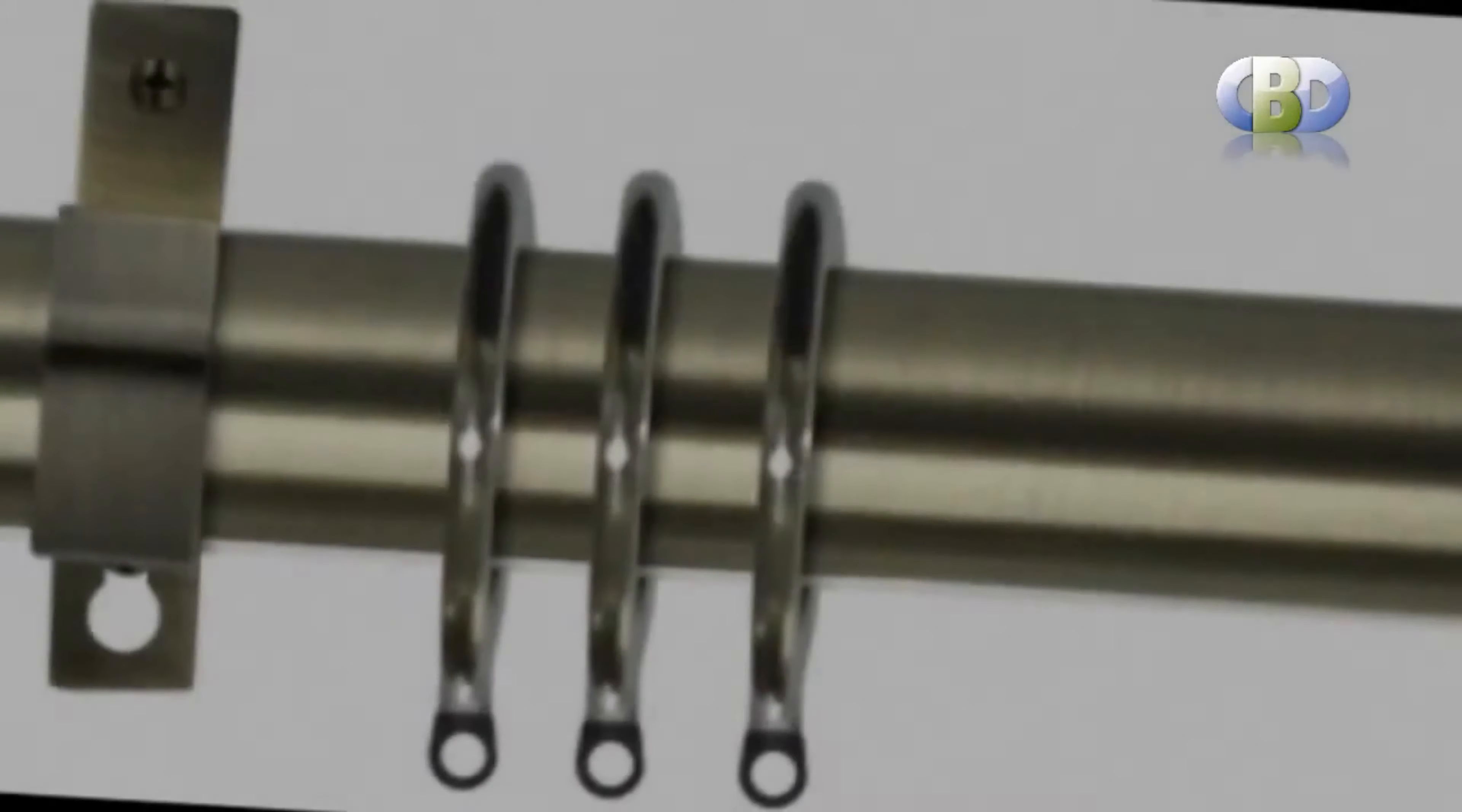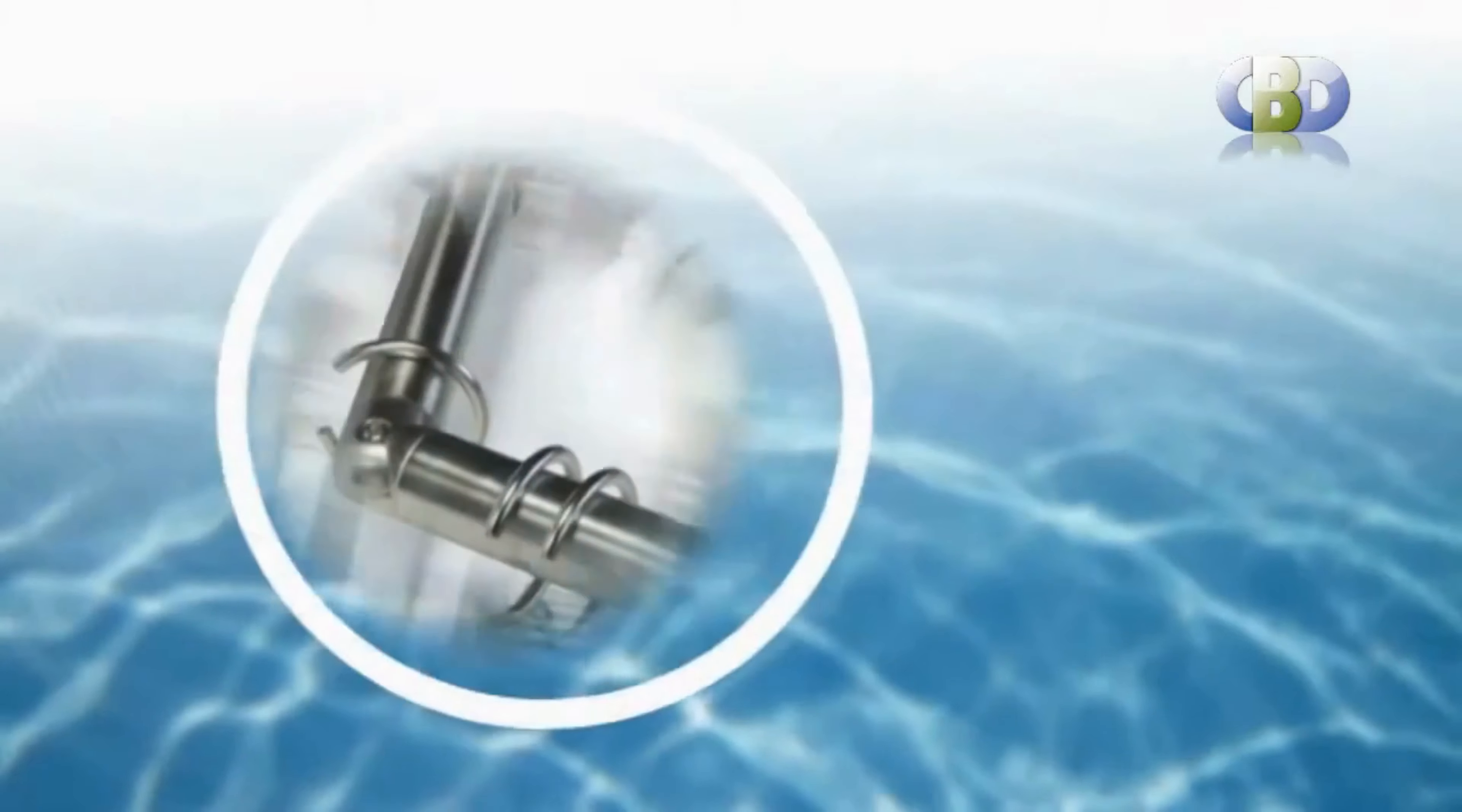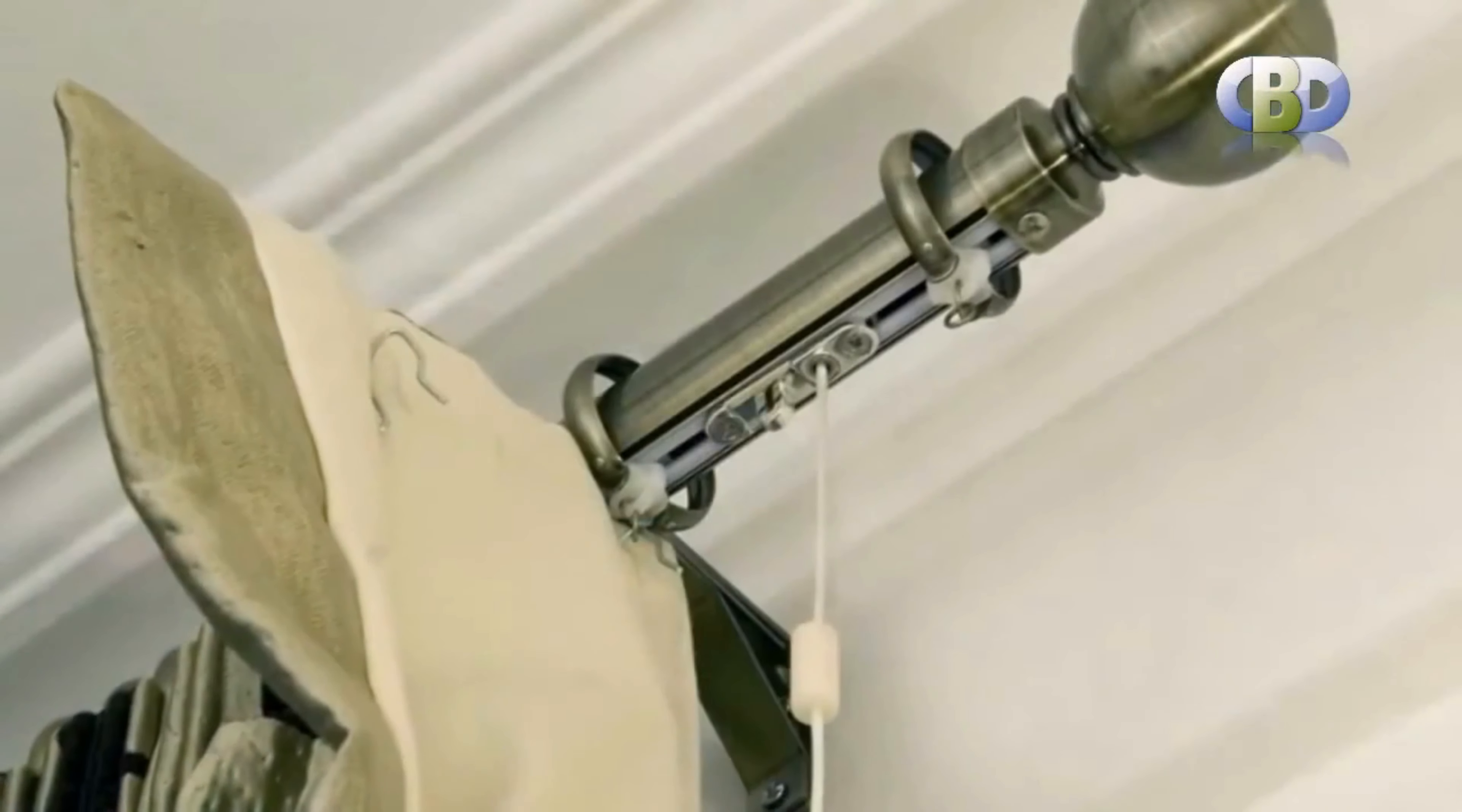The natural beauty of wooden curtain poles in diameters of 28mm up to 50mm and in a wide range of color effects and special paint finishes. Our longest pole can cover 6m.